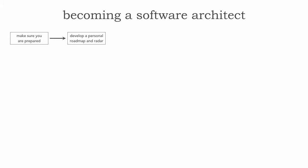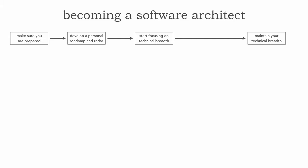After developing a personal roadmap and radar, the next thing in becoming a software architect is to really start focusing on technical breadth — I introduced this in lesson three of Software Architecture Monday — and maintaining that technical breadth all through your career. It's also about learning the language of software architects: learning the architectural styles and patterns.